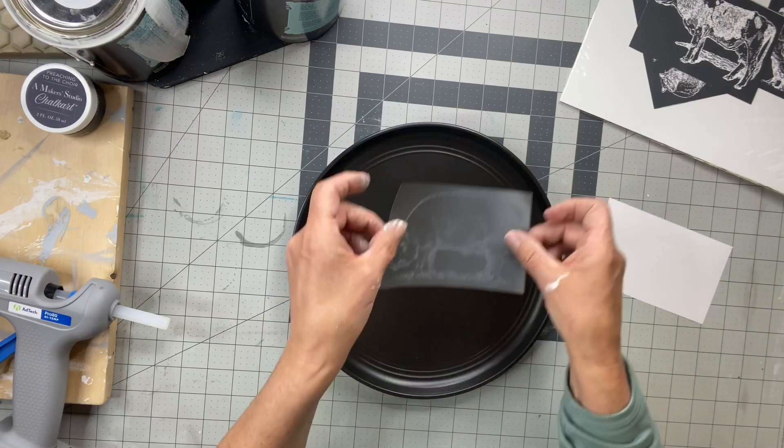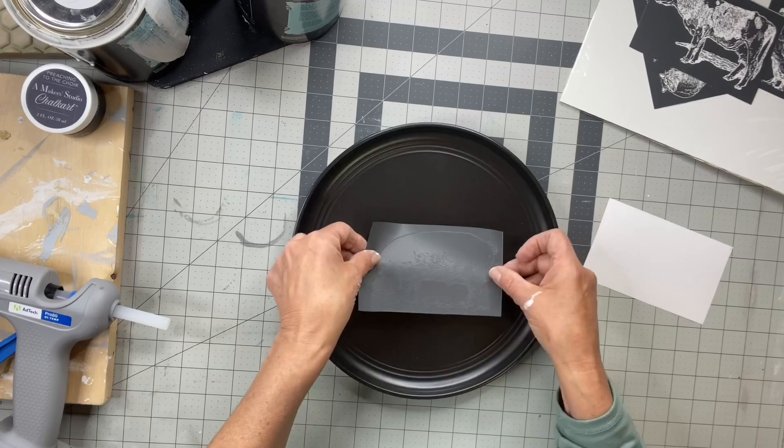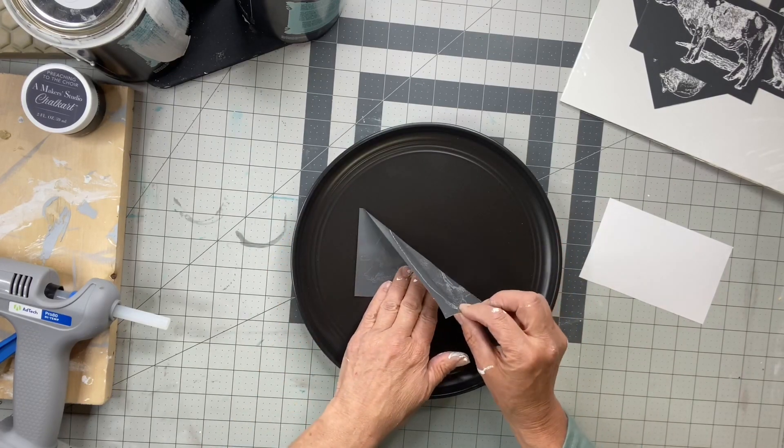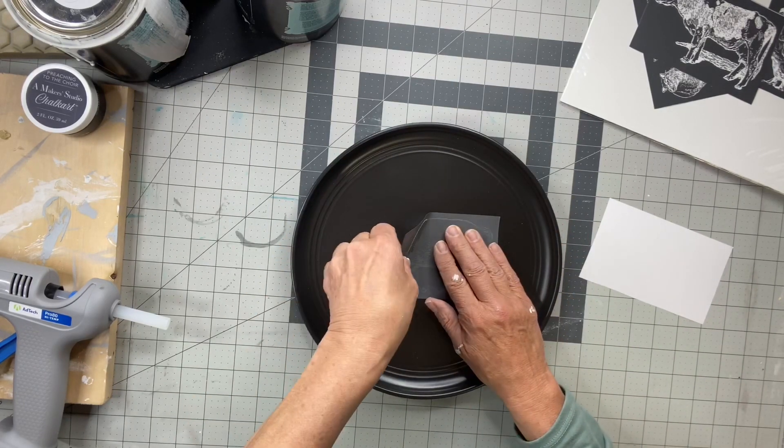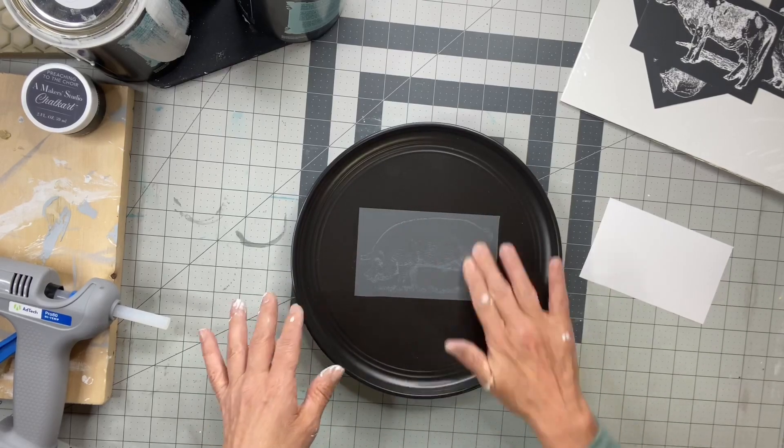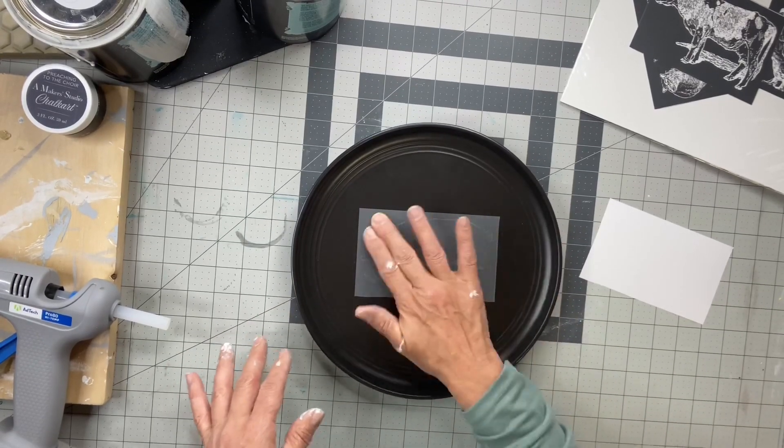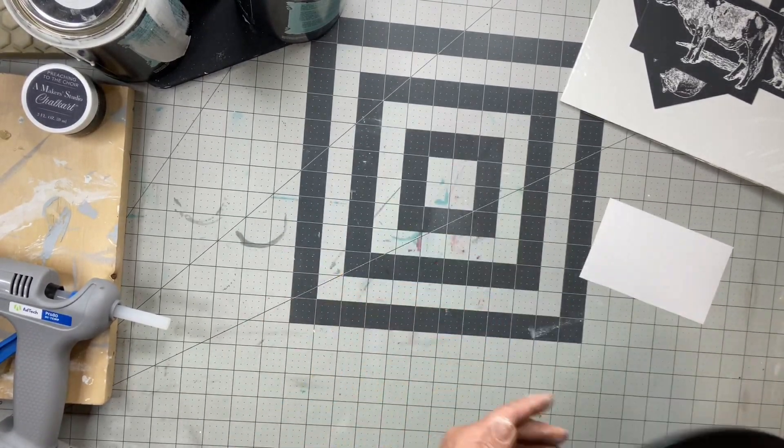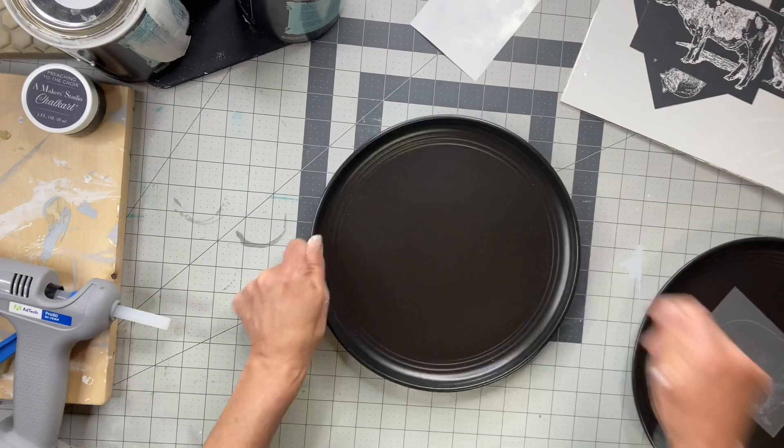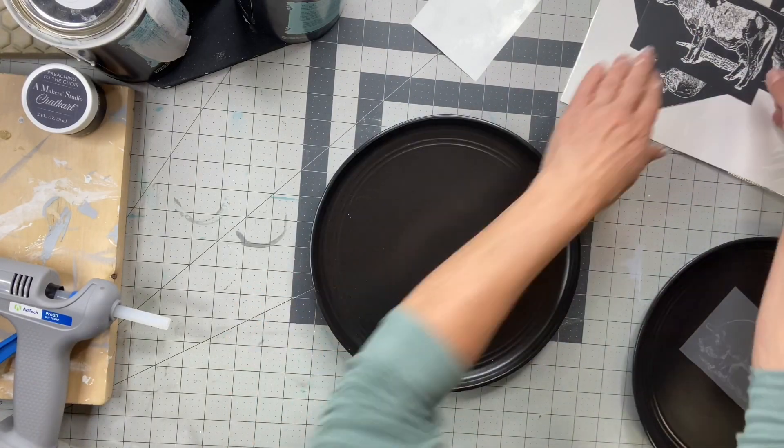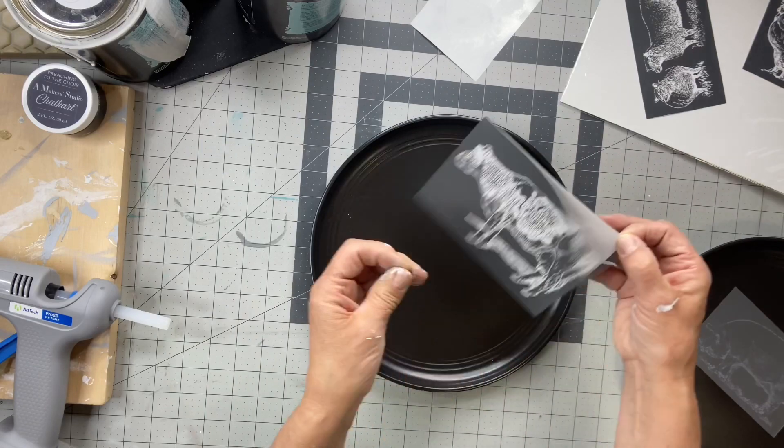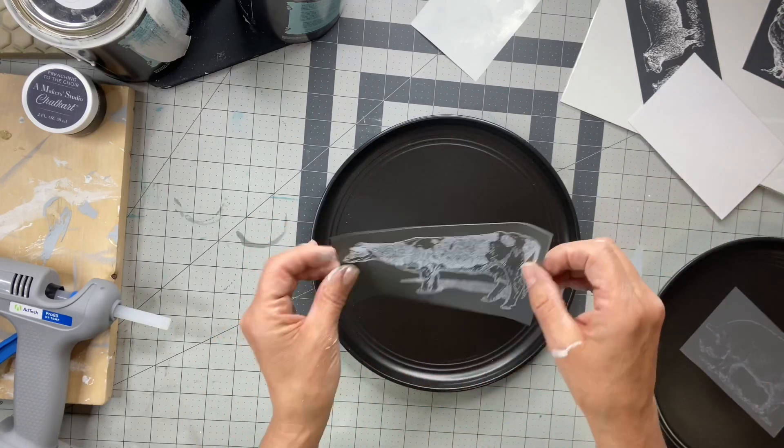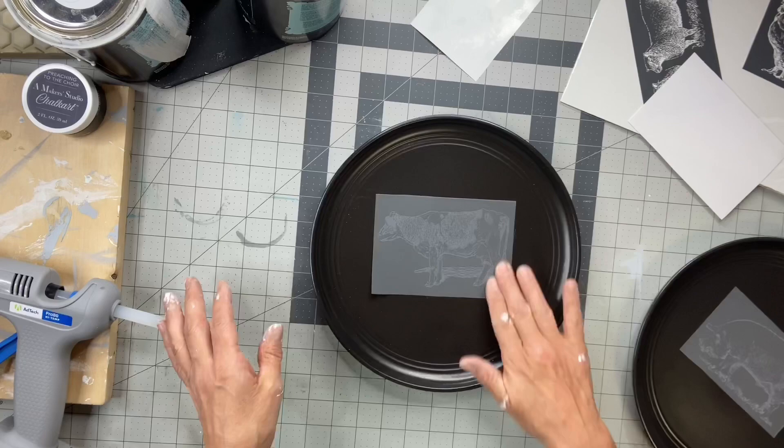You want to make sure you hold on to your backing that you take your stencil off of, because once it's clean that's where you want to put it back. So I'm going to start by centering the best I can each stencil, and you want to make sure that you're rubbing your finger over each one, getting any bubbles out. I call it burnishing, where you are making sure that it's adhered well to your surface.